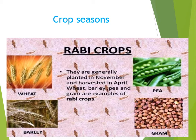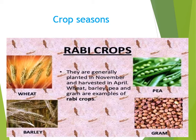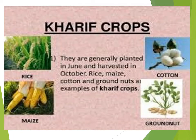Different crops require different climatic conditions and temperature for their growth and maturity. In India, there are two main seasons of crop growth: Kharif and Rabi. Rabi crops are generally planted in November and harvested in April. Some examples of Rabi crops are wheat, barley, pea, and gram. Kharif crops are generally planted in June and harvested in October. Rice, maize, cotton, and groundnuts are some examples of Kharif crops.